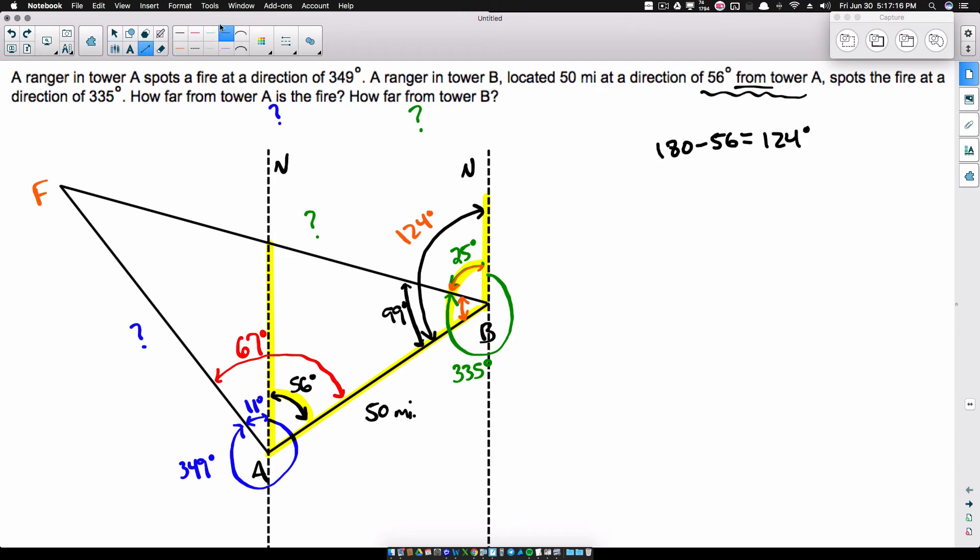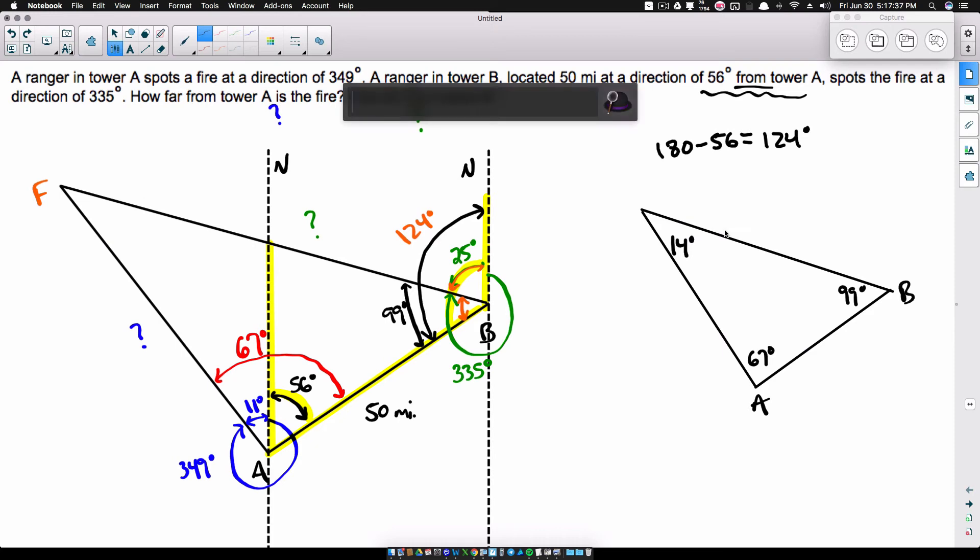So with that said, I'm just going to come over here and clean up my mess a little bit. I'm going to draw the same triangle very quickly. And I'm just going to write those numbers in. So we've got 67 here at angle A. Angle B, we said that was 99 degrees with a little bit of geometry. And that leaves us with what? I think 14 degrees right here. Let's double check that. We just used the 180 rule. So 180 minus 99 minus 67. Yeah, 14 degrees where our fire is. And what else do we have? The 50 miles.